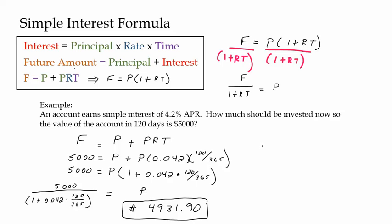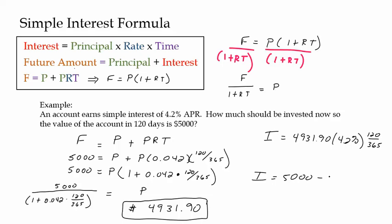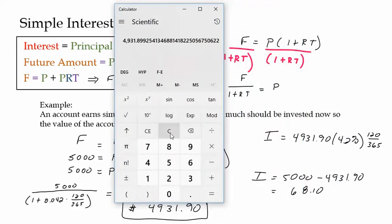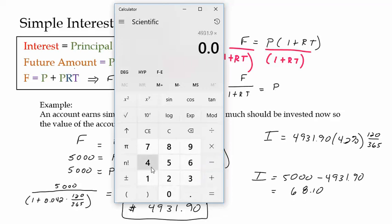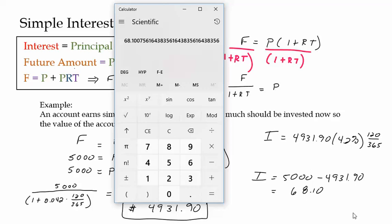What was the amount of interest earned? We could do principal times rate times time, or we could do $5,000 minus $4,931.90, which gives $68.10. And we can check: if we do 4,931.90 times 0.042 times 120 over 365 — principal times rate times time — we also get $68.10. That's a way to check your work; the interest should be the difference between the future value and the present value.